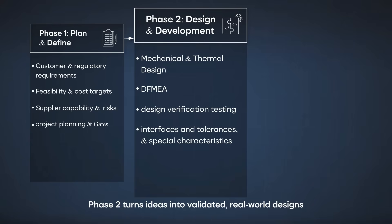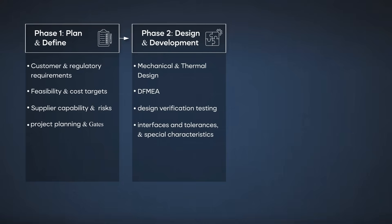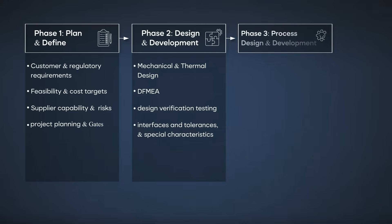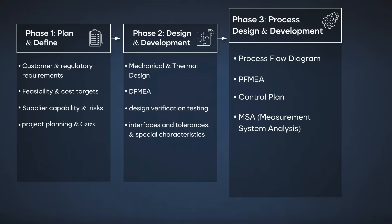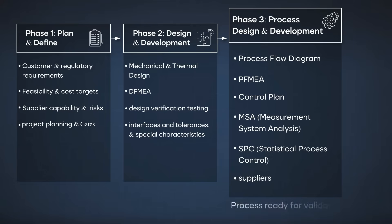Now that the product design is stable, we must figure out how to manufacture it consistently. That's the goal of phase three: process design and development. In this phase we create the process flow diagram defining each step of production, conduct a PFMEA to identify potential process-related risks, develop a control plan that links each process step to its inspections, measurements and reaction plans, perform MSA (measurement system analysis) to ensure gauges and test equipment are accurate and repeatable, implement SPC (statistical process control) for critical parameters like torque, dimensions or leakage, and align with suppliers. In short, phase three builds the bridge between design intent and real-world manufacturing capability.